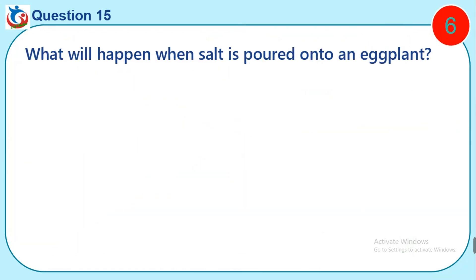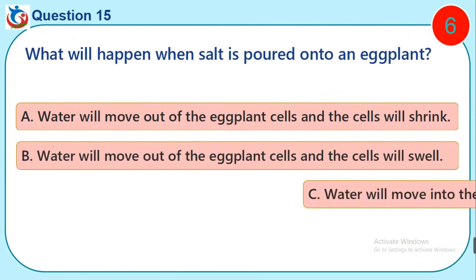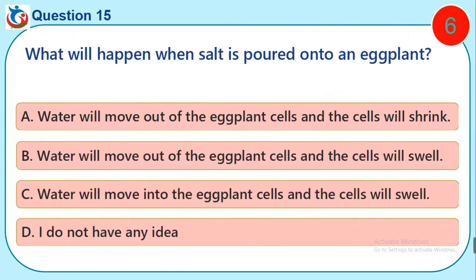Question 15. What will happen when salt is poured onto an eggplant? A. Water will move out of the eggplant cells and the cells will shrink. B. Water will move out of the eggplant cells and the cells will swell. C. Water will move into the eggplant cells and the cells will swell. D. I do not have any idea.